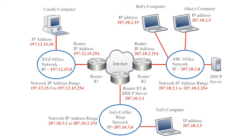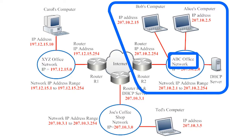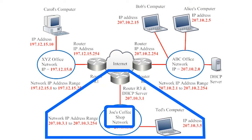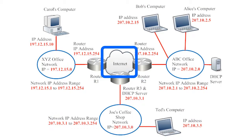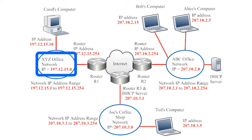This illustration shows a couple of different ways that IP addresses get assigned to devices. The diagram includes three fictional networks: the XYZ office network, the ABC office network, and Joe's coffee shop network. The rest of the internet has been condensed into a cloud in the middle. First, let's take a look at the XYZ office network on the left side — those red numbers are the IP addresses for the whole network.